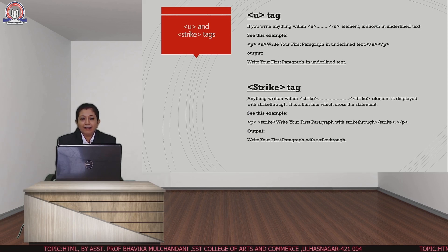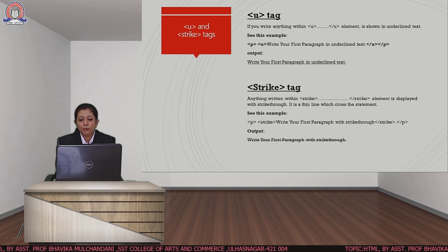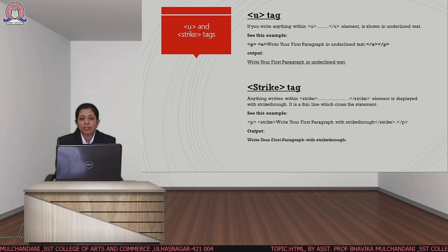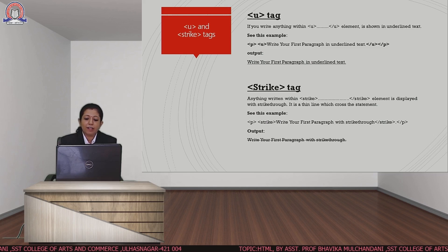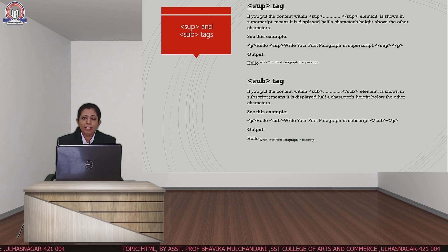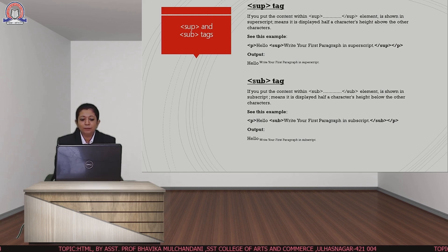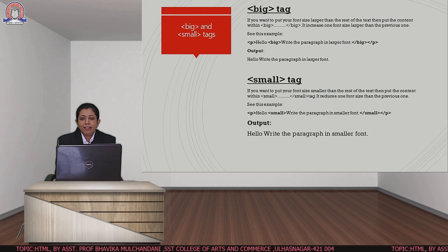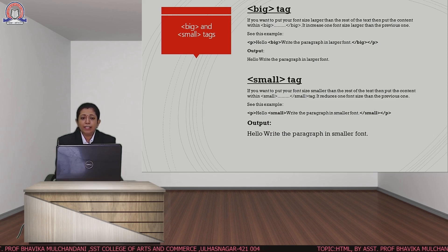For underlining text we have the u tag, with syntax u and slash u. If we want a line through the text, we have the strike tag with syntax strike and slash strike. For superscript and subscript we have the sup and sub tags — the syntax is sup and slash sup for superscript, and sub and slash sub for subscript. We also have the big tag and small tag, used to change the font size larger and smaller accordingly, with syntaxes big and slash big, and small and slash small.